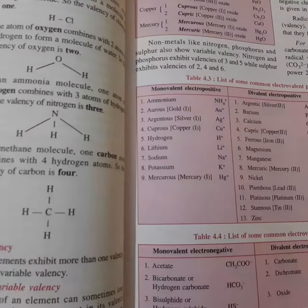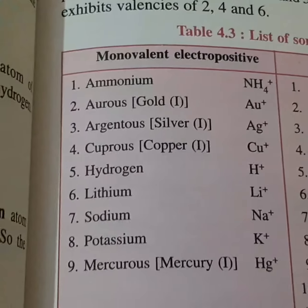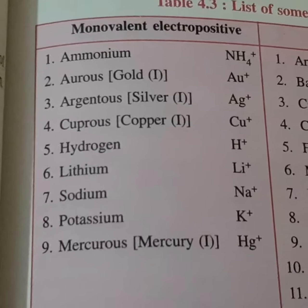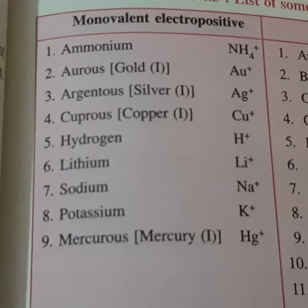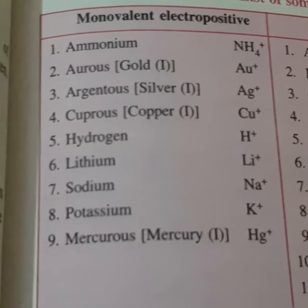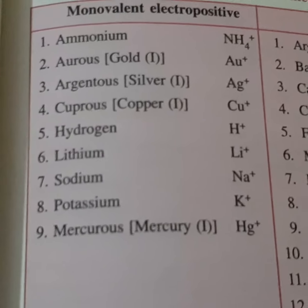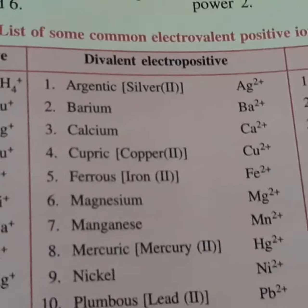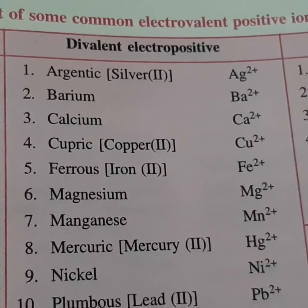The first list I am showing you contains positive radicals that are monovalent — having a plus one charge. For example: ammonium NH4+, gold Au+, silver Ag+, cuprous Cu+, hydrogen H+, lithium Li+, sodium Na+, potassium K+, and so on. These are all positive radicals — cations.